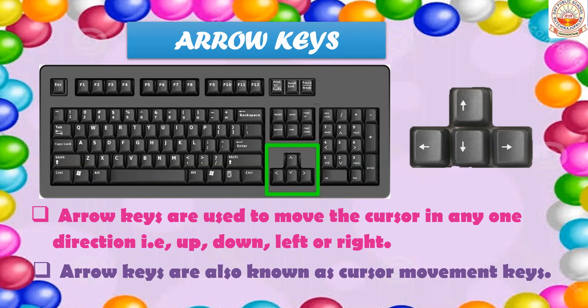The arrow keys, also called cursor control keys, are used to move the cursor in any direction — up, down, left, or right. The arrow marks on the keys indicate the direction the cursor will move when pressed. Pressing up moves the cursor upward, down moves it downward, left moves it left, and right moves it right.